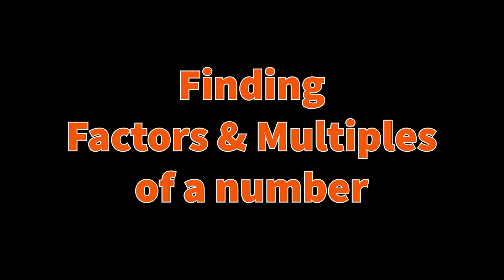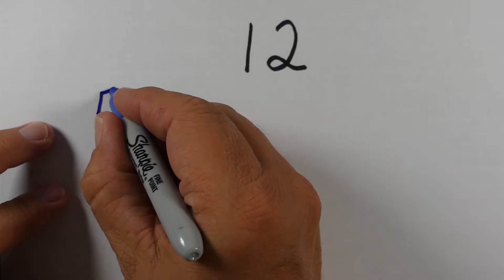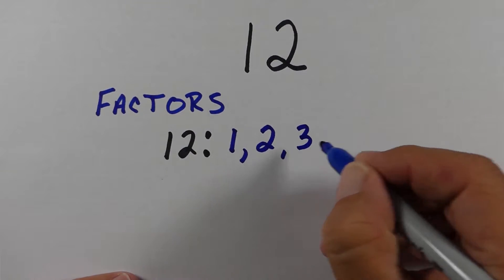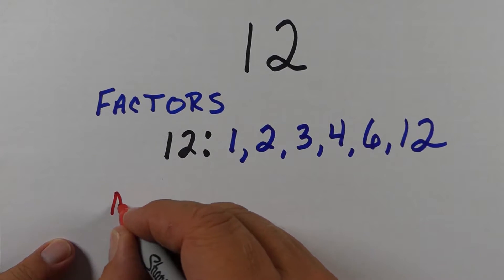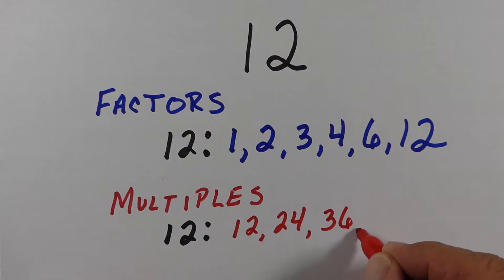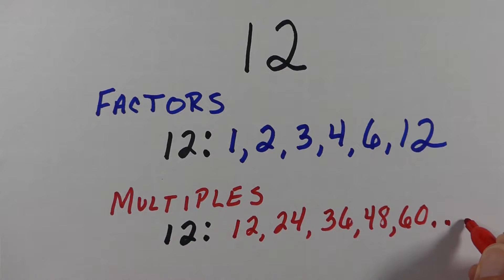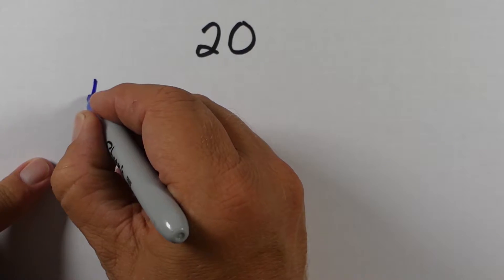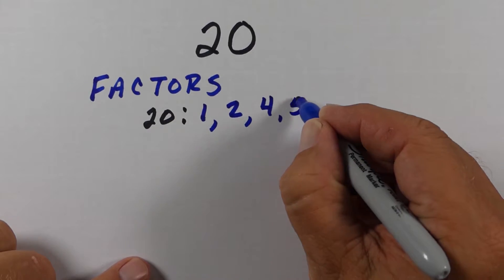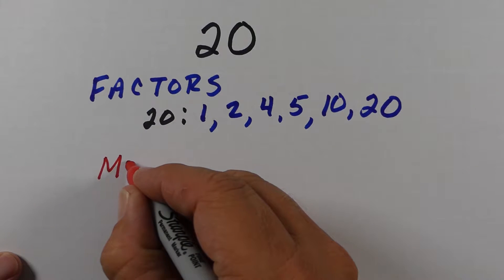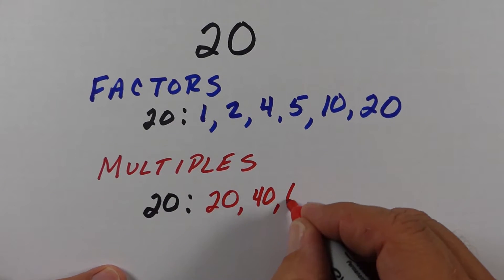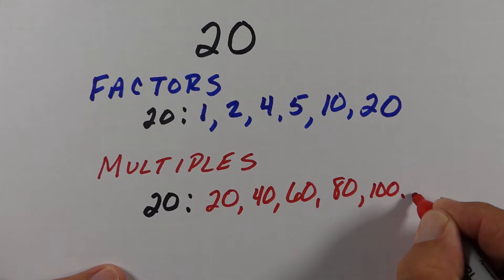Here's a couple of numbers where we're going to find both the factors and multiples of a certain number. For the number twelve, first we find the factors: one times twelve, two times six, and three times four — all those numbers are factors of twelve. For multiples of twelve, we take that number and multiply it by one, by two, by three, by four, and so on — every multiple keeps getting bigger. For the number twenty, the factors are one, two, four, five, ten, and twenty. But to find multiples, we take twenty times one equals twenty, twenty times two equals forty, times three, times four, times five, and it just goes on.